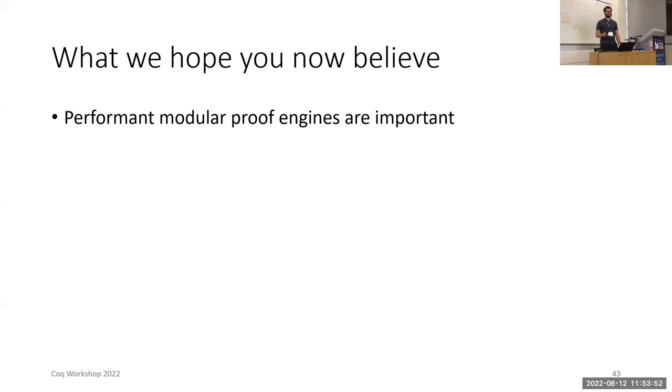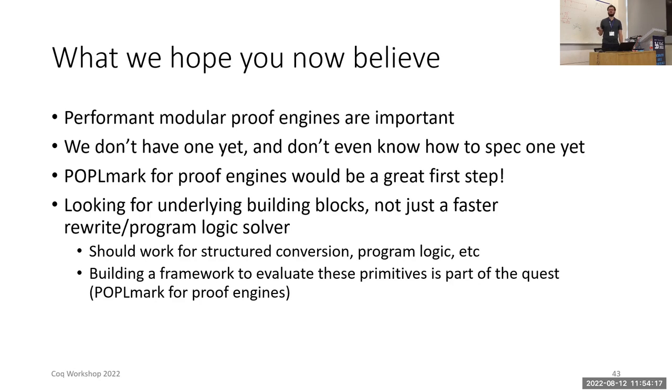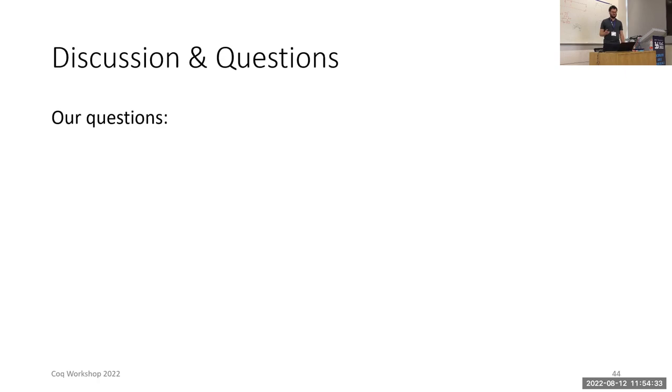We hope you now believe that performance modular proof engines are important. I really hope you believe that we don't have one yet, and we don't even know how to spec one. This is why I'm saying that Popplemark for proof engines would be a great first step. I believe the field should be approaching this problem systematically, and to do that we need a measuring stick, we need benchmarks, and perhaps we need a call to action. We are looking for the underlying building blocks, not just a factor tactic for this case or for that case. It should work for automating all of the kinds of proof goals that we want.